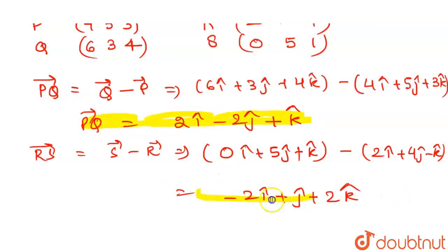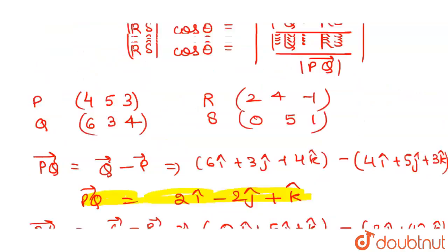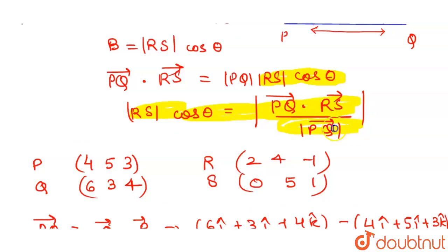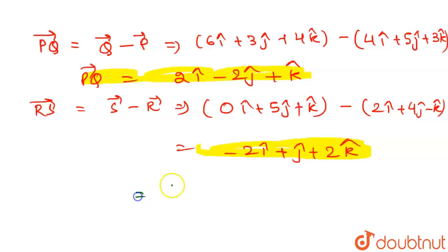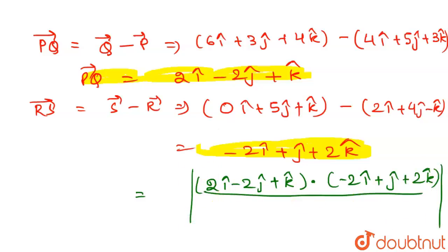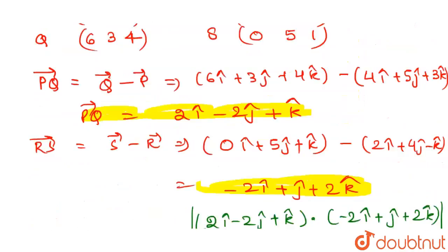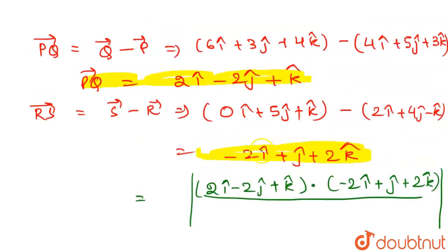Now we have the values of PQ vector and RS vector, so we'll put these into the formula. PQ · RS will be (2i - 2j + k) · (-2i + j + 2k) divided by |PQ|. The magnitude of PQ vector will be √(2² + (-2)² + 1²), which is √(4 + 4 + 1) = √9 = 3.